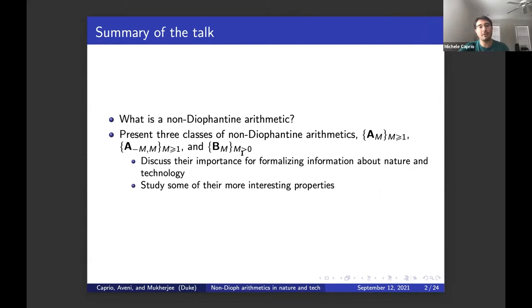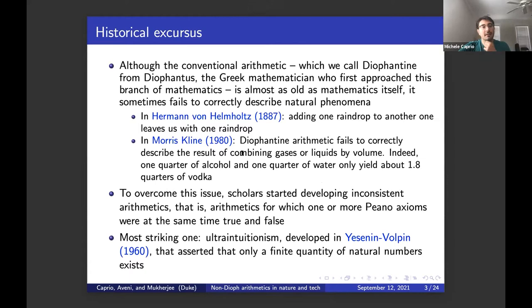A summary of the talk is the following. We first introduce what a non-Diophantine arithmetic is, and then we present three classes of non-Diophantine arithmetics. In particular, we will discuss their importance for formalizing information about nature and technology, and we also study some of their more interesting properties on the math side.